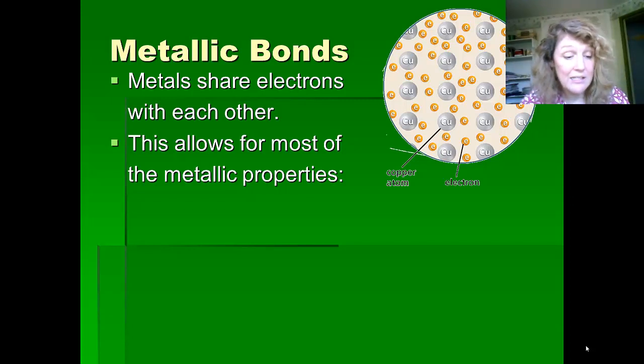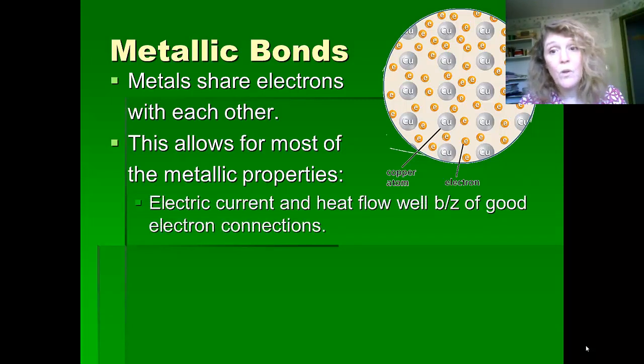And this means that when you want to send an electric current through it or heat through it, it all goes from electron to electron. It doesn't have to go from this atom to this atom to this atom because that takes time. That's why metals are such good conductors of heat and electricity because it just zips right on through that layer of electrons.